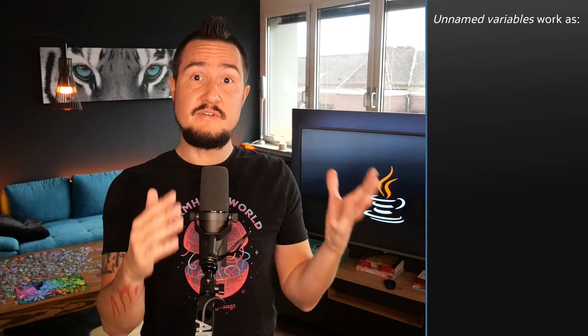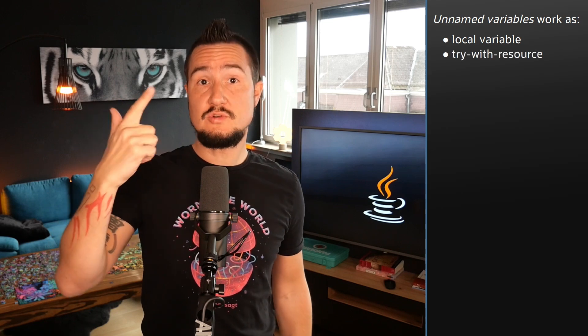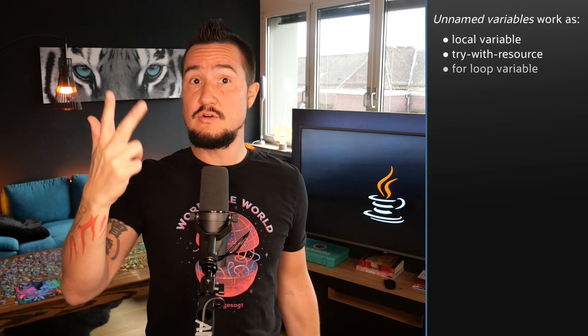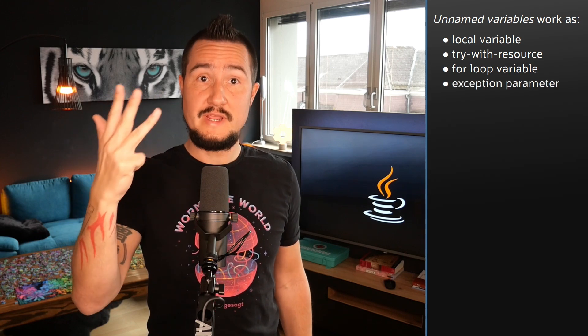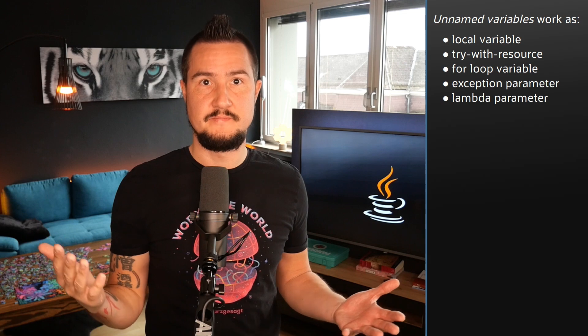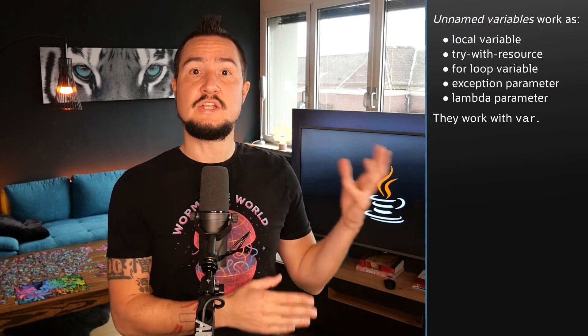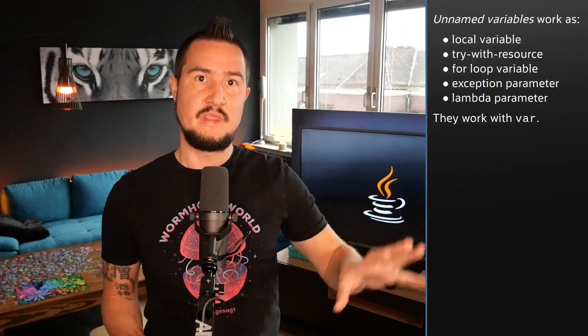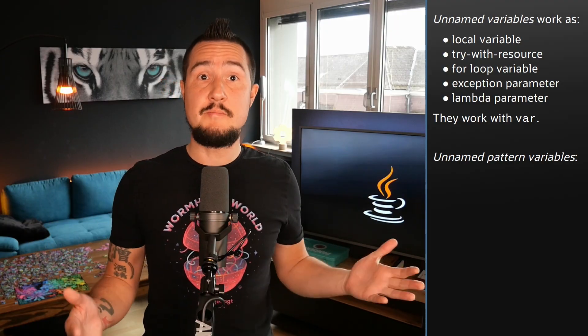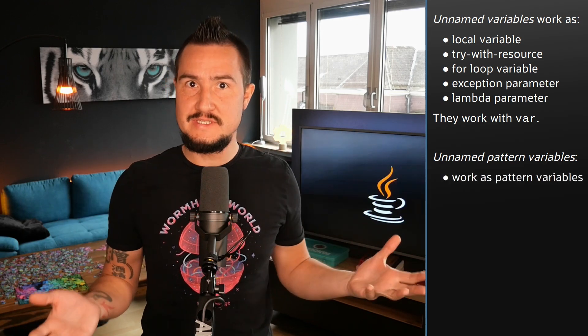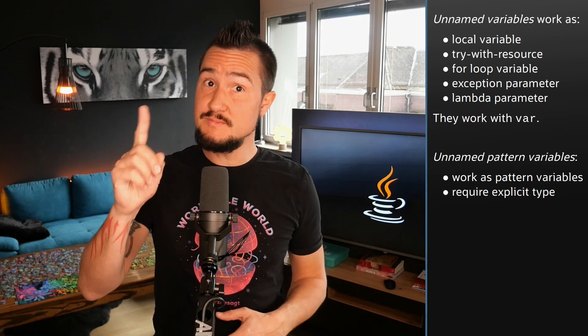Unnamed variables replace the variable name in a local variable declaration, a resource specification of a try-with-resources statement, the header of a basic or enhanced for loop, an exception parameter of a catch block, or a formal parameter of a lambda expression. You can use unnamed variables with var, and just like there, there must always be an initializer — for example an expression on the right-hand side of a local variable declaration. Declaring an unnamed variable does not place a name in scope, which means it can't be written or read after it has been initialized. Since nothing is placed in scope, there is no shadowing and you can declare multiple such variables. Unnamed pattern variables replace the variable name in patterns — namely in type and record patterns, because that's all we have at the moment. They do require explicit types though.